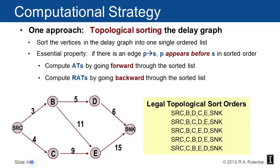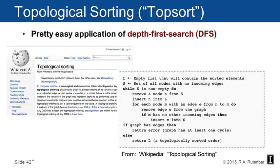A topological sort just comes up with an order such that predecessors appear before successors. Valid orderings include: source, B, D, C, E, sink; source, B, C, D, E, sink; source, B, C, E, D, sink; source, C, B, D, E, sink; and source, C, B, E, D, sink. This is simply a depth-first search walk on the graph with a little processing — very easy to implement.